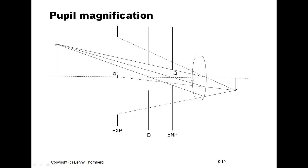At the same time, the same iris opening will also define the corresponding cone on the output — the largest possible cone where light can actually exit the lens system. This cone is defining, at the projection point Q', the exit pupil.